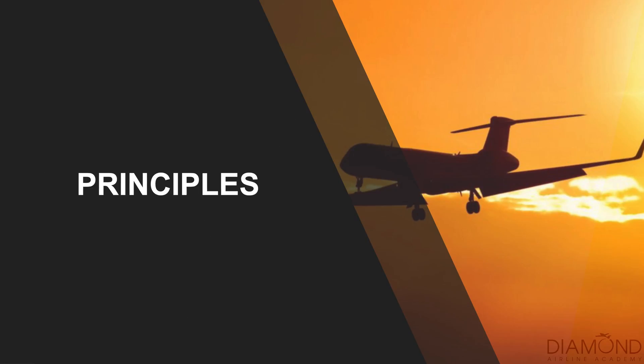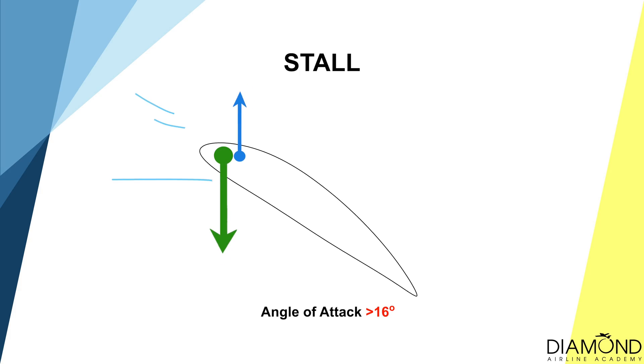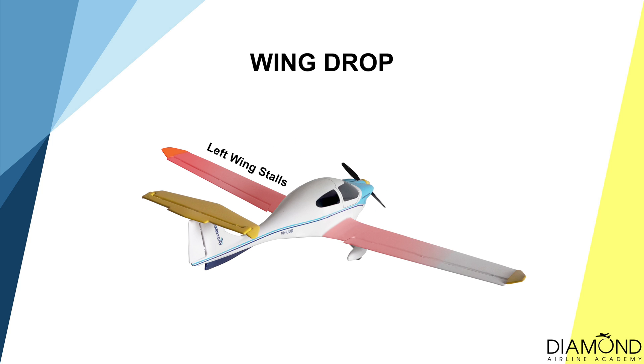In this lesson, we will talk about how to avoid getting into a spin. Firstly, we will look into why a wing would stall before the other. When the angle of attack exceeds 16 degrees, the wing would stall. When one wing's angle of attack exceeds 16 degrees before the other wing, wing drop would occur.